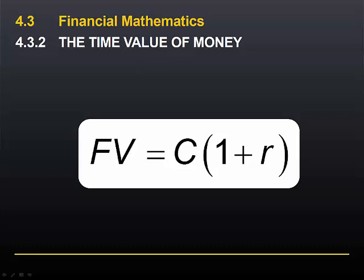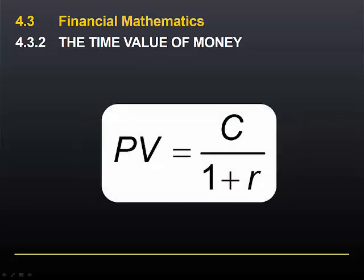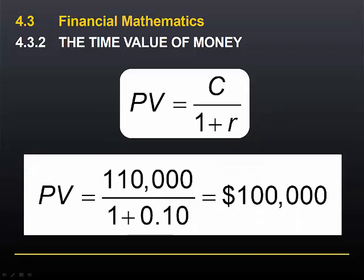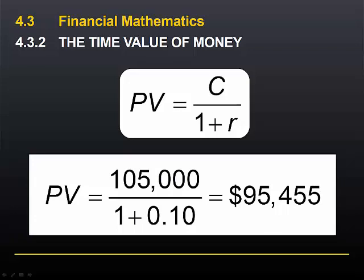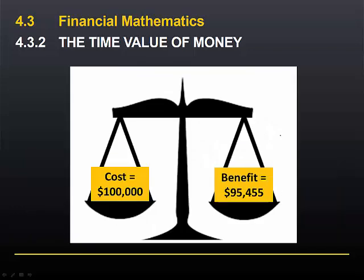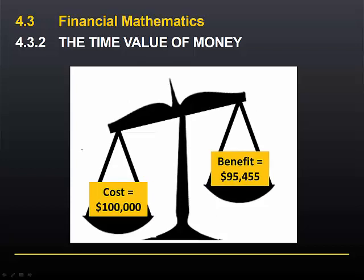We can change this formula by dividing both sides of the equation by 1 plus R, and this gives us a formula for the present value of a future cash flow. Here we can see how to use this equation to calculate the present value of $110,000 given an interest rate of 10%. If we apply this formula to the investment we considered in the previous examples, we can see that if the interest rate is 10%, the present value of $105,000 is $95,455. Now that we have all cash flows in terms of cash today, we can see that the cost of the investment is $100,000 and the benefit in present value terms is $95,455. Clearly the cost outweighs the benefit and we should not proceed with this investment.